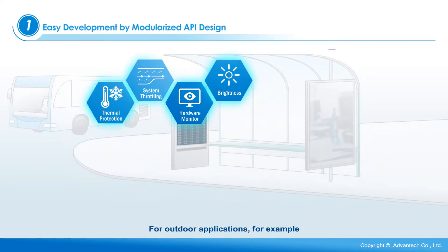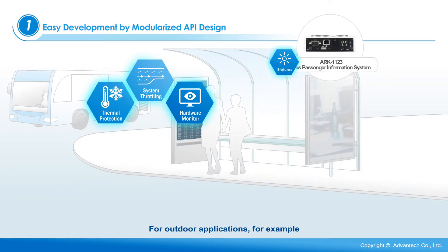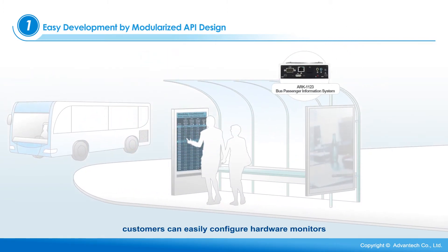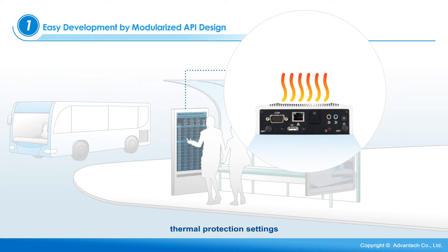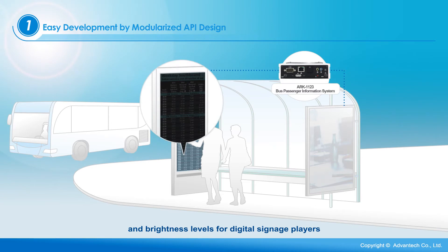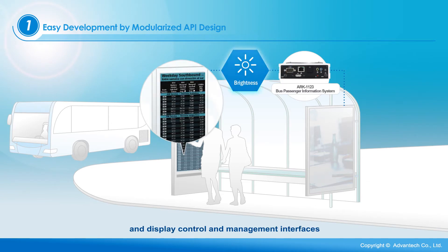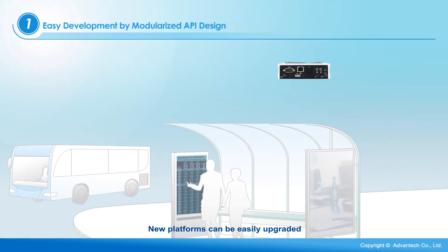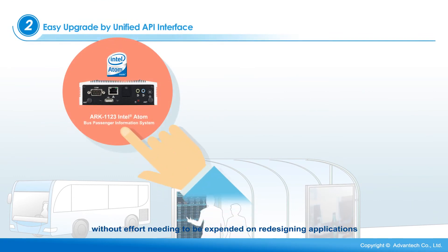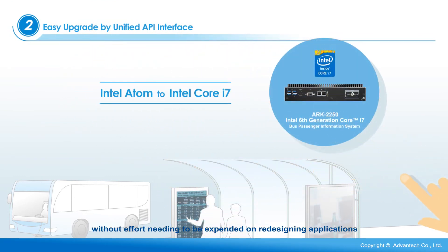For outdoor applications, for example, customers can easily configure hardware monitors, thermal protection settings, system throttling, and brightness levels for digital signage players, and display control and management interfaces. New platforms can be easily upgraded without effort needing to be expended on redesigning applications.